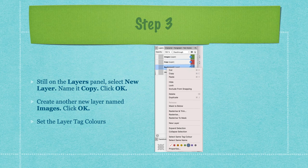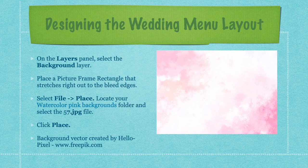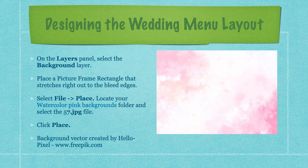Now designing the wedding menu: on the layers panel select the background layer, which is the bottom of the three layers. Don't select the master layer — you don't want to be working in that. Select the background layer, place a picture frame rectangle that stretches right out to the bleed edges, then select File and Place. Locate your watercolor pink background folder and select the '57.jpeg' file.